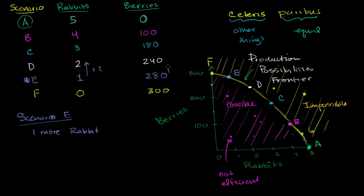So this is plus one over here. Well, I'm going to give up 40 berries. And you can see it visually right here. If I try to get one more rabbit, I can't go into this impossible, this unattainable part right over here. I have to stay on the production possibilities frontier, sometimes abbreviated as PPF. But if I want one more rabbit, the production possibilities frontier drops off, and I will have to give up 40 fruit.